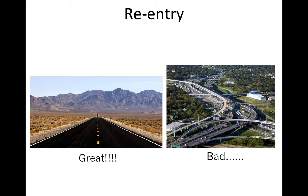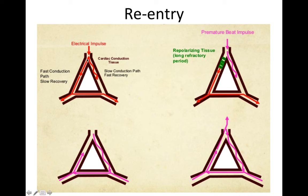Re-entry is the most common cause of tachyarrhythmias. Usually, depolarization occurs in sequence: the sinus node depolarizes first, then the atrium, then the AV node, then the His-Purkinje system, then the ventricles — one road that leads to the end. If there are multiple pathways, this can lead to re-entry. For example, if an extra beat such as a premature atrial contraction blocks down one pathway but goes down the other, it can spin around and continue to propagate itself in a re-entrant mechanism until something stops it.